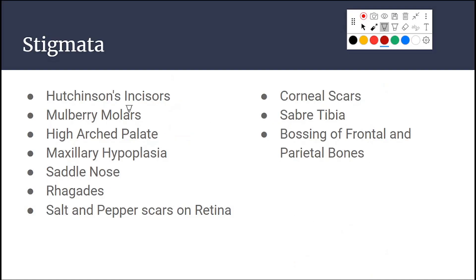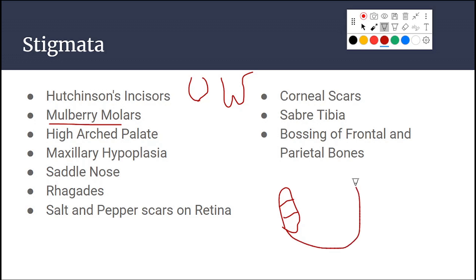Stigmata include Hutchinson's incisors — anteroposterior thickening of the teeth with notching on the narrow cutting edge, appearing notched on lateral view and barrel-shaped on AP view. Mulberry molars refer to deficient or imperfectly formed cusps and deficient dental enamel on the molar teeth — no enamel on the cusps.